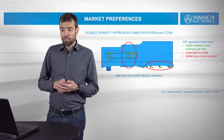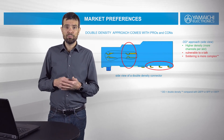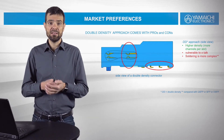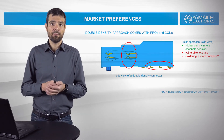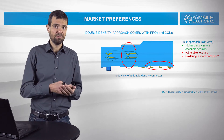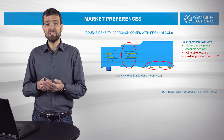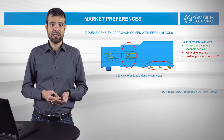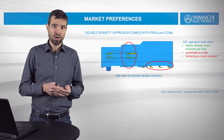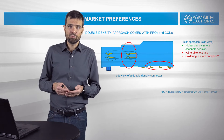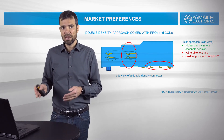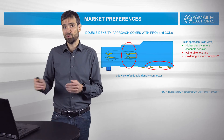The double density approach comes with pros and cons. As the name says, the density is doubled, which means the amount of channels is doubled. For QSFP you have 4 channels; for QSFP-DD you have 8 channels — that is the huge advantage. On the other side, the DD approach is more vulnerable to crosstalk, and the soldering process is more complex.